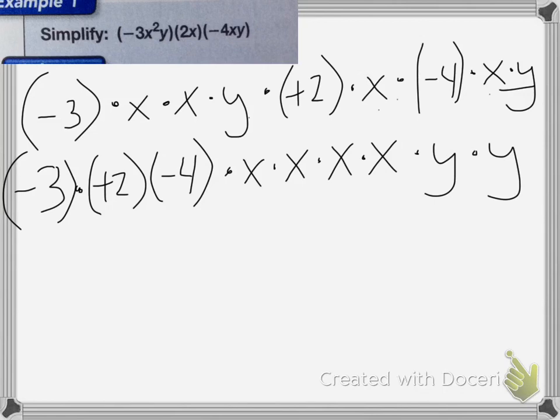Now using the associative property we're going to group the factors by multiplying the numerical factors and gathering the variable factors with exponents. So first we're going to multiply negative 3 times positive 2 times negative 4. So negative 3 times a positive 2 equals negative 6 times a negative 4 equals a positive 24.